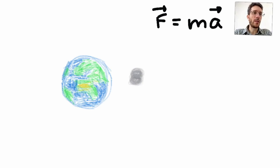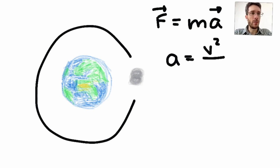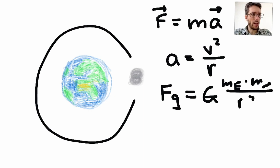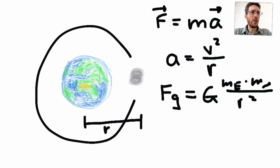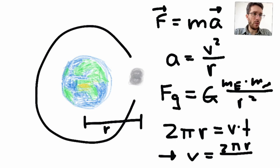We're going to use the fact that when we assume the Moon goes around the Earth in a circular path, we have a centripetal acceleration of a equals v squared over r. We're also going to use the universal law of gravity, where the force of gravity is G times the mass of the Earth times the mass of the Moon over r squared — r being the distance between the center of the Earth and the Moon. We'll also use that the circumference, 2πr, will be traveled in time t at speed v. Therefore, v equals 2πr over t.